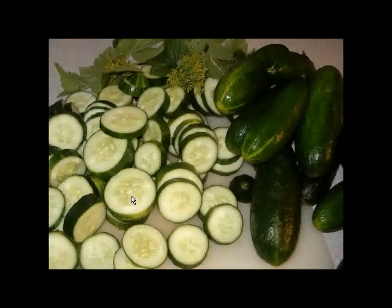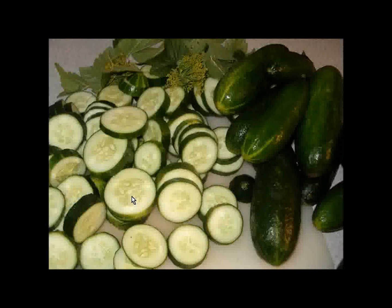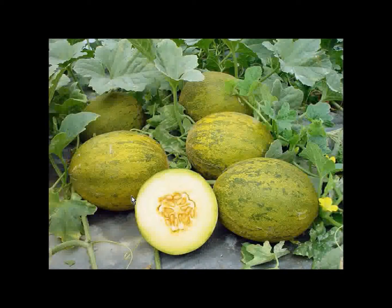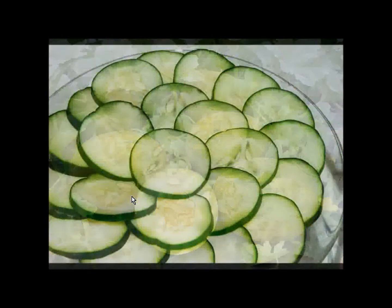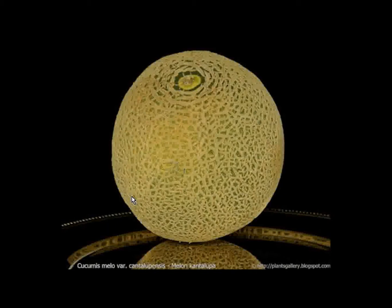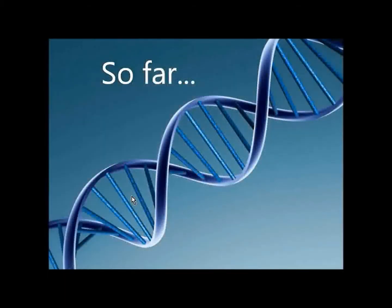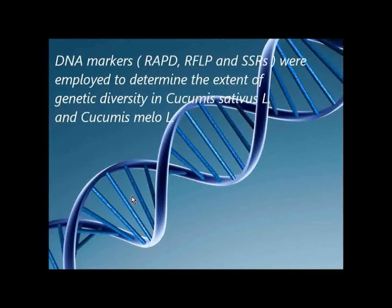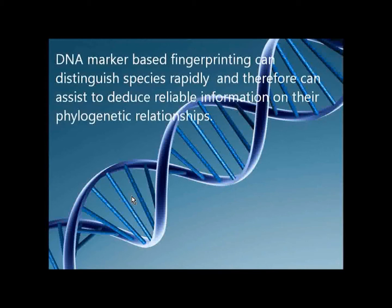Cucumus has high moisture and vitamin C content and they are mainly used as salad crops which have limited nutritive value but are rich in antioxidants. The cucurbits are characterized by bitter principles called cucurbitacins. Musk melon has high iron content compared to cucumber which is rich in vitamin C. DNA markers were employed to determine the extent of genetic diversity in Cucumus sativus and melos. DNA marker-based fingerprinting can distinguish species rapidly and deduce reliable information on their phylogenetic relationships.